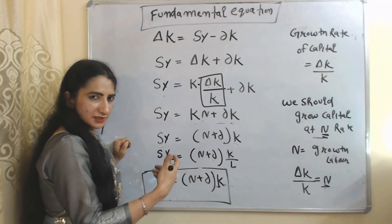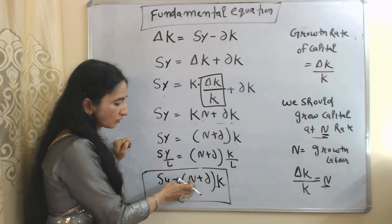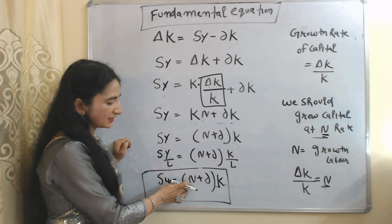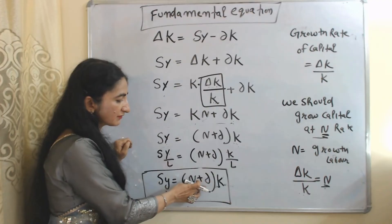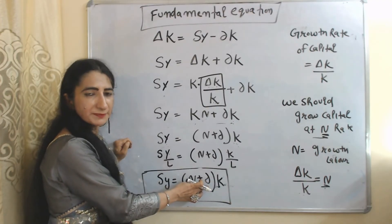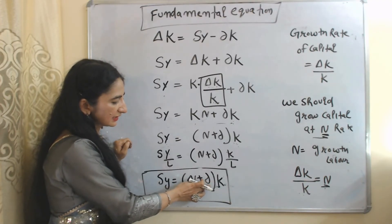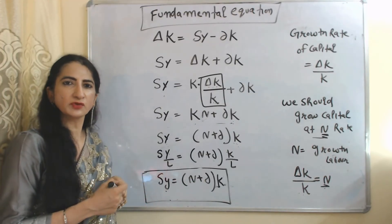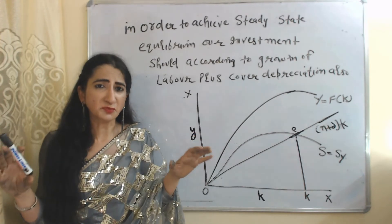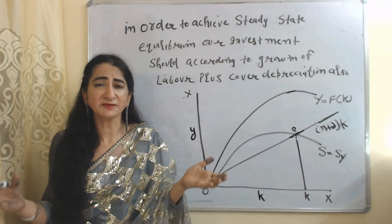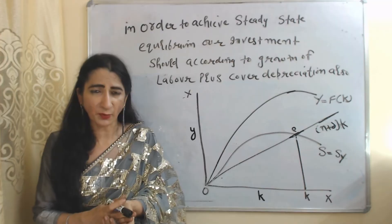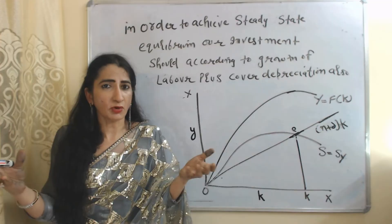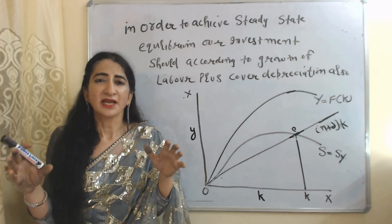For simplicity, we write Y/L as small y and K/L as small k. This gives us the fundamental equation of the Solow model. According to this model, investment should match the growth rate of population plus also cover depreciation. So the fundamental equation states: investment = n·k + δk, where n is population growth and δ is depreciation.